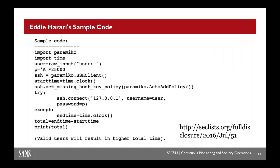Here's Eddie Harari's sample code. It assumes port 22 by default — you can add a port parameter under the try statement if you run SSH daemons on different ports, as I do for internet-facing systems. If you want to drop this into Kali, it works out of the box. It uses Paramiko, a fantastic Python library for SSH that makes SSH connections trivial to set up, great for this kind of work.